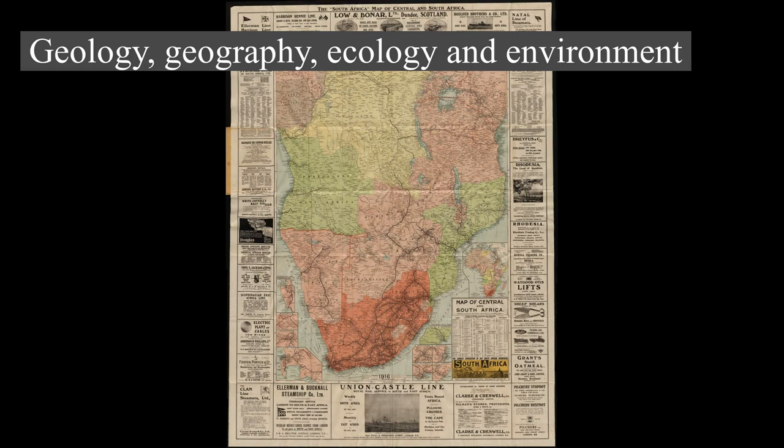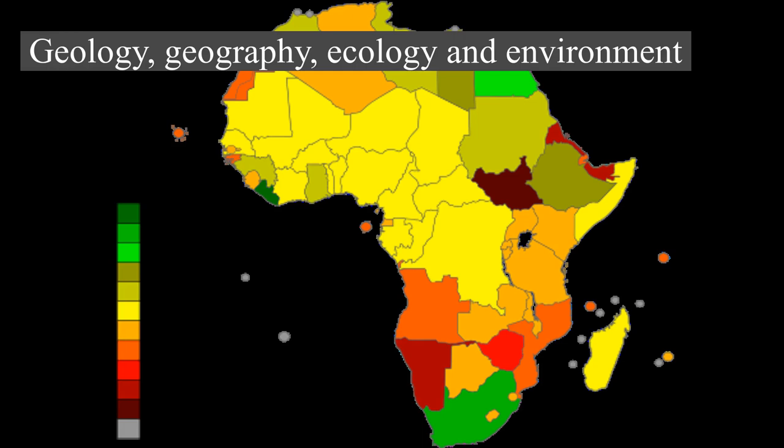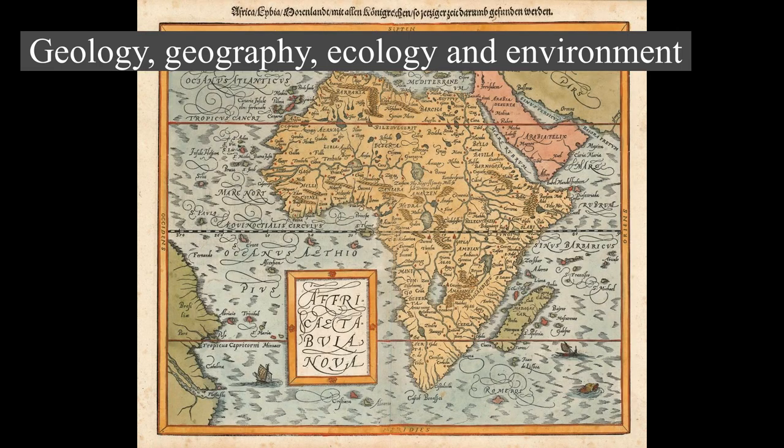The coastline is 26,000 km (16,000 miles) long, and the absence of deep indentations of the shore is illustrated by the fact that Europe, which covers only 10,400,000 km² — about a third of the surface of Africa — has a coastline of 32,000 km (20,000 miles). From the most northerly point, Ras Ben Sakka in Tunisia (37°21'N), to the most southerly point, Cape Agulhas in South Africa (34°50'S), is a distance of approximately 8,000 km (5,000 mi). From Cape Verde (17°33'22"W), the westernmost point, to Ras Hafun (51°27'52"E), the most easterly projection near the Horn of Africa, is approximately 7,400 km (4,600 mi).